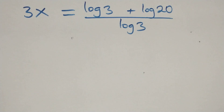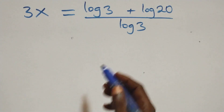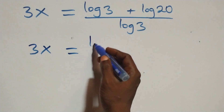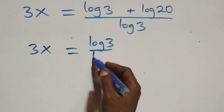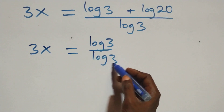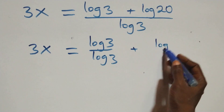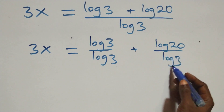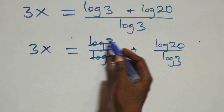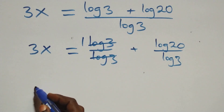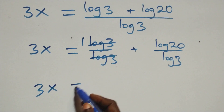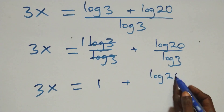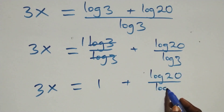Then the next step: we separate this into two fractions. We have three x equals log three over log three plus log twenty over log three. Since log three over log three equals one, this implies three x equals one plus log twenty over log three.